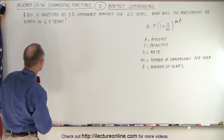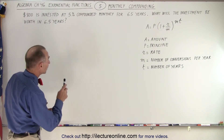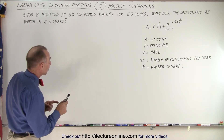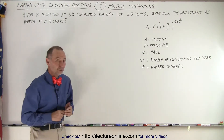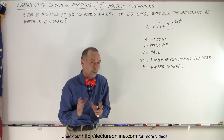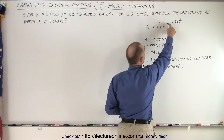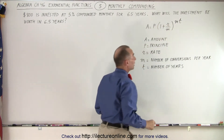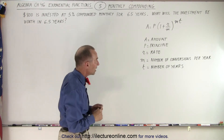So let's say we have $800 invested at 5% compounded monthly for 6.5 years. What will the investment be worth in 6.5 years? The equation we're going to use is similar to the one we used before, except the rate is now divided by m, and we have an m in the exponent along with the variable t.